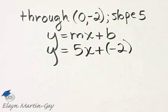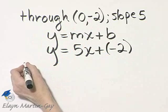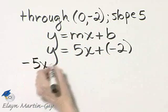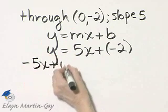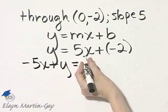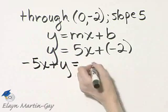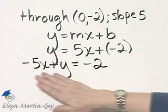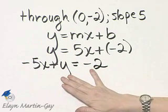Now we want to write this in standard form. I will subtract 5x from both sides, so I'll have negative 5x plus this y is equal to, and if I subtract 5x from this side, I'm left with negative 2. Now here is my equation in standard form.